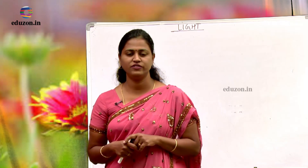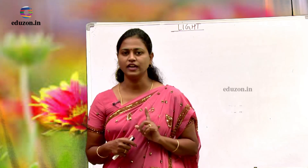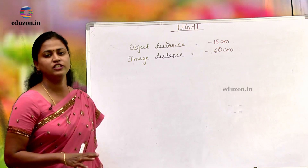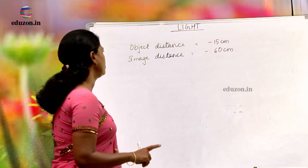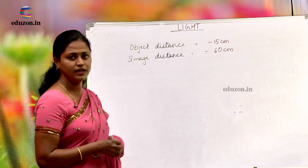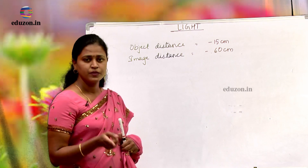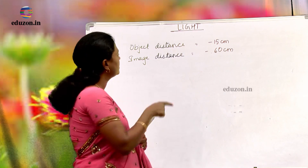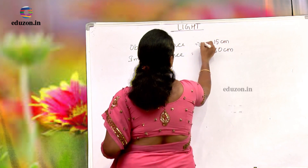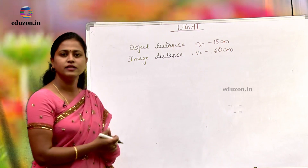Find the linear magnification of the given object. For that, we need to write down V and U. To find the magnification we need to write down V and U. What is U? U is the object distance which is minus 15 centimeters. Because he is placing the candle at 15 centimeters from the mirror and he wants to project it at 60 centimeters from the mirror. So, U is equal to minus 15 and V is equal to minus 60 centimeters.